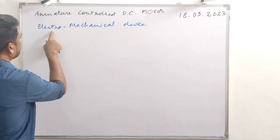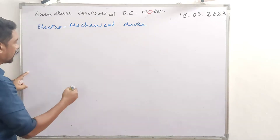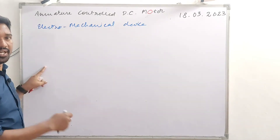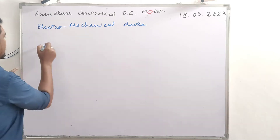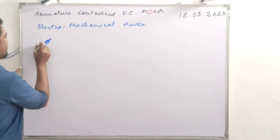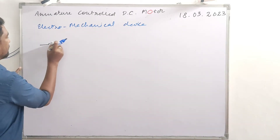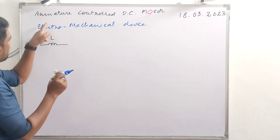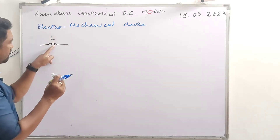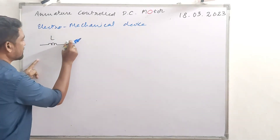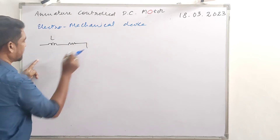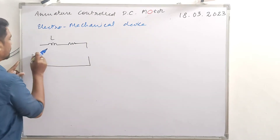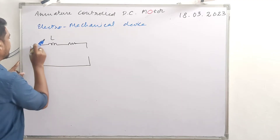The electrical part represents a component of armature winding and internal resistance. This arrangement has inductance L, made up of metal wire, so it has some internal resistance. The input voltage V has a positive and a negative terminal.